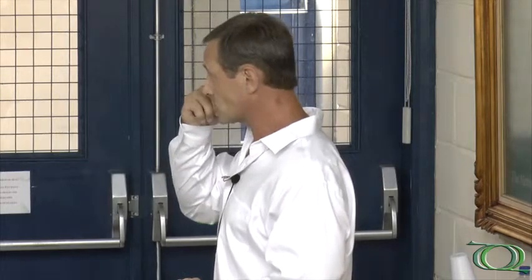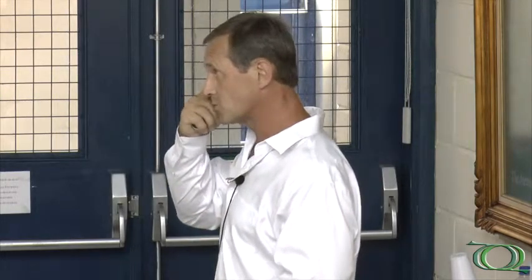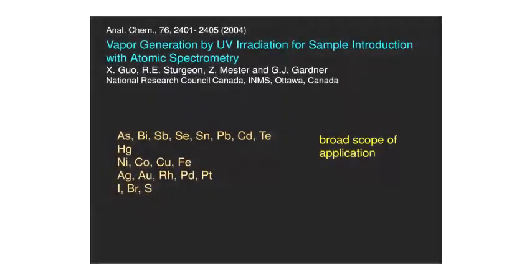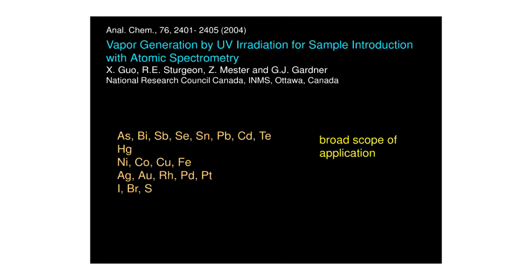With nickel, iron, and cobalt, only the carbonyl species form. The application range for photochemical generation is potentially broad. It includes all those elements for which chemical hydride generation has been successfully demonstrated, cold vapor for mercury, but even some of the transition metals — nickel, cobalt, copper, iron — and some of the noble metals and even non-metals.